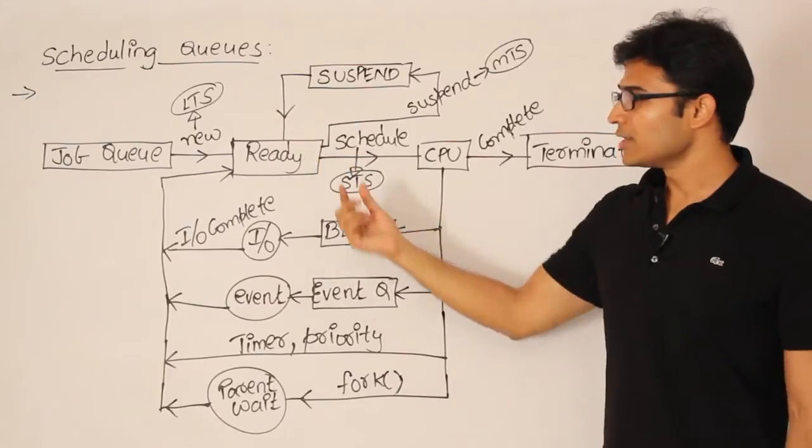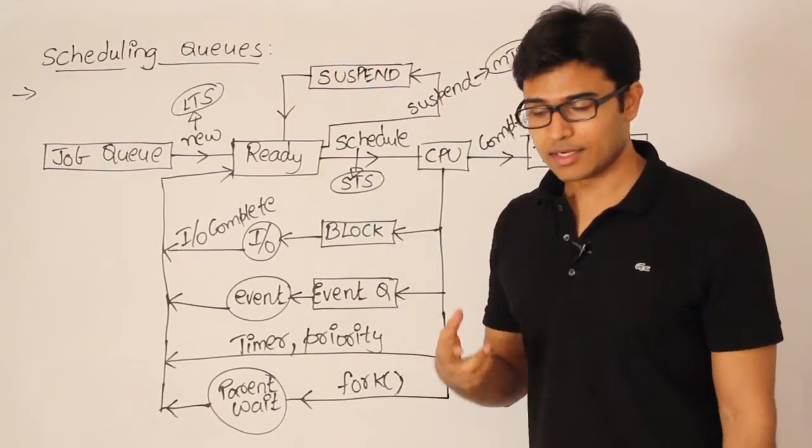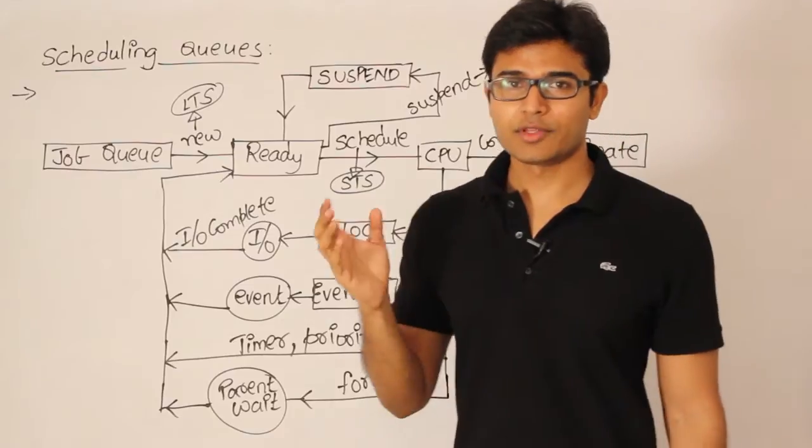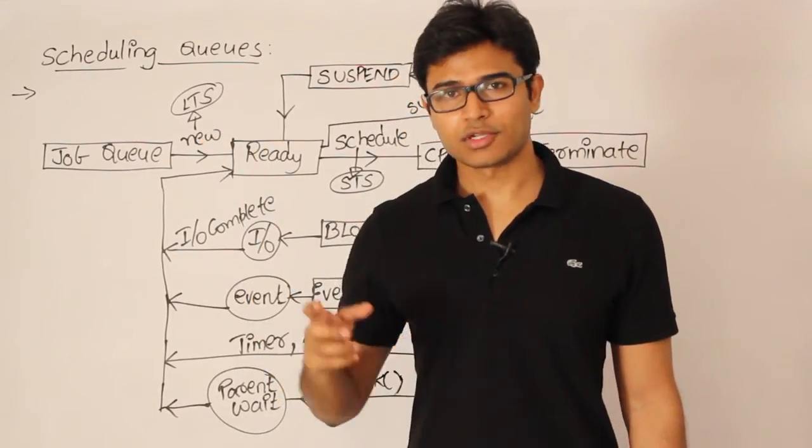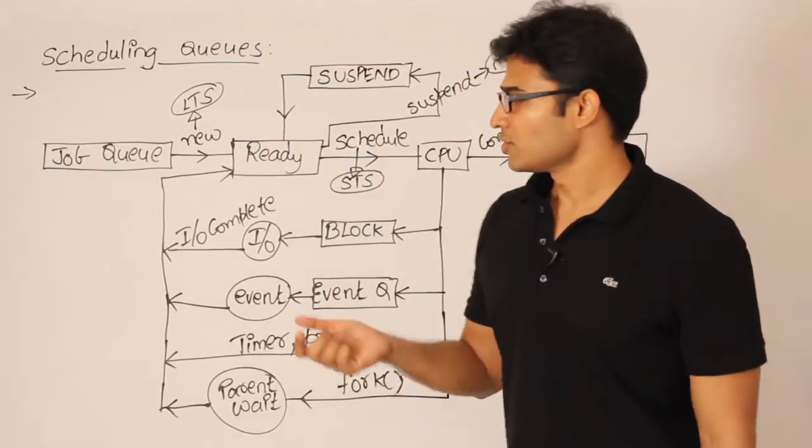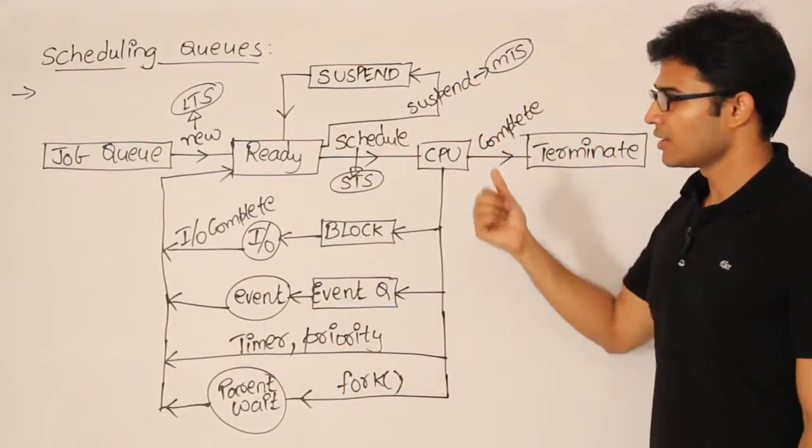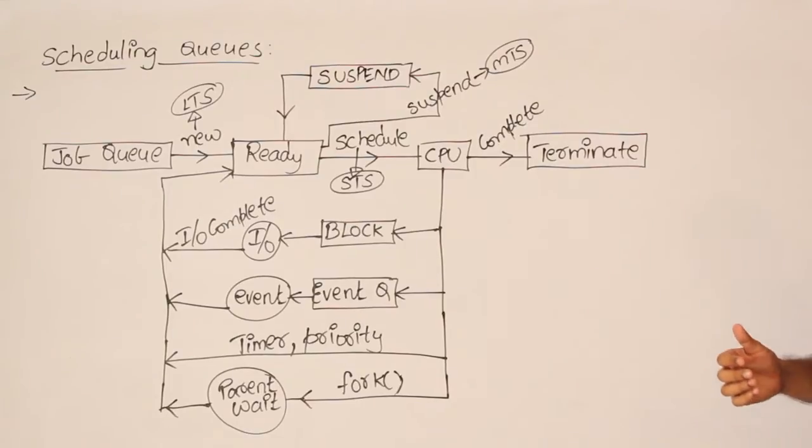It means that these are the data structures which are used to keep track of the processes. Later it will be easy for us to see how many processes are in the ready queue and how many processes are in the suspend queue, so that we can move them around. So these queues will contain the entire database. Like what are the processes? Where are they? Everything.